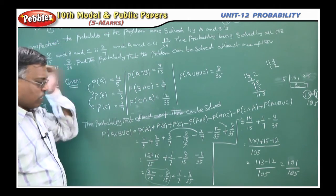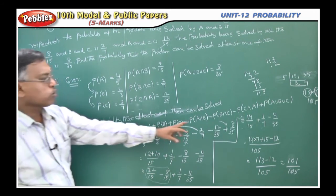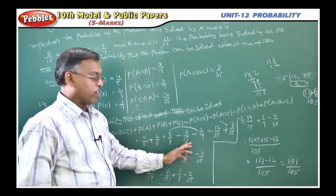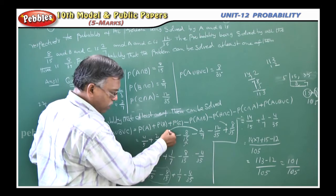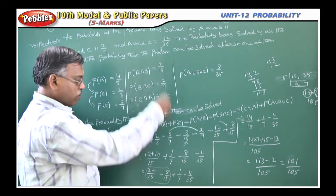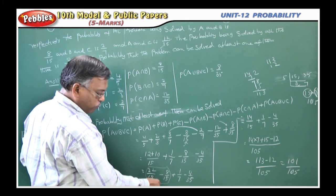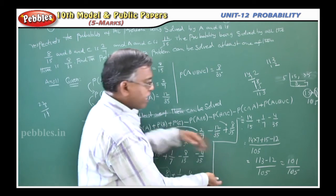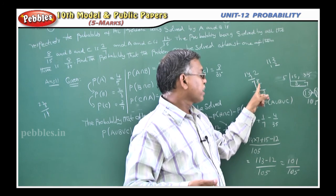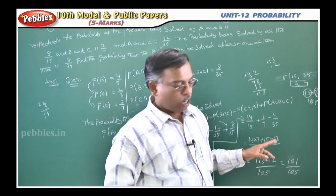Very simple — only the simplification part is more. The data is very easy: P(A), P(B), P(C) are given, and all intersection values are given. You just substitute those values in order. While simplifying, be careful — simplify like terms first and it will be easy. These two simplify, then next two, then take LCM 105 to get 14×7 = 98, plus 15, giving 113 minus 12 = 101. So the answer is 101 by 105.